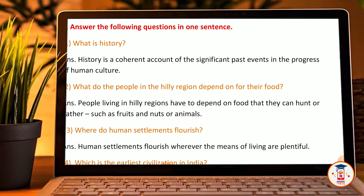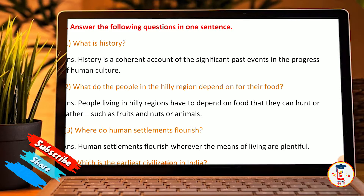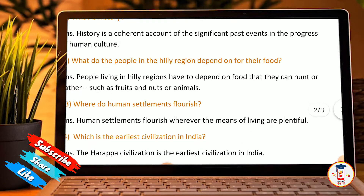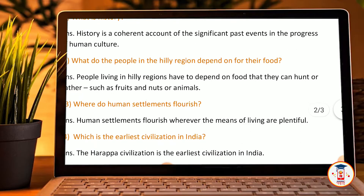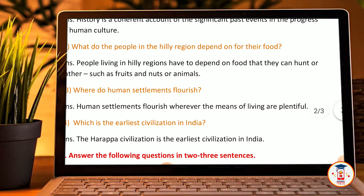The people in the hilly region depend on the food that they can hunt or gather, such as fruits, nuts and animals. Where do human settlements flourish? Human settlements flourish when the means of living are plentiful.